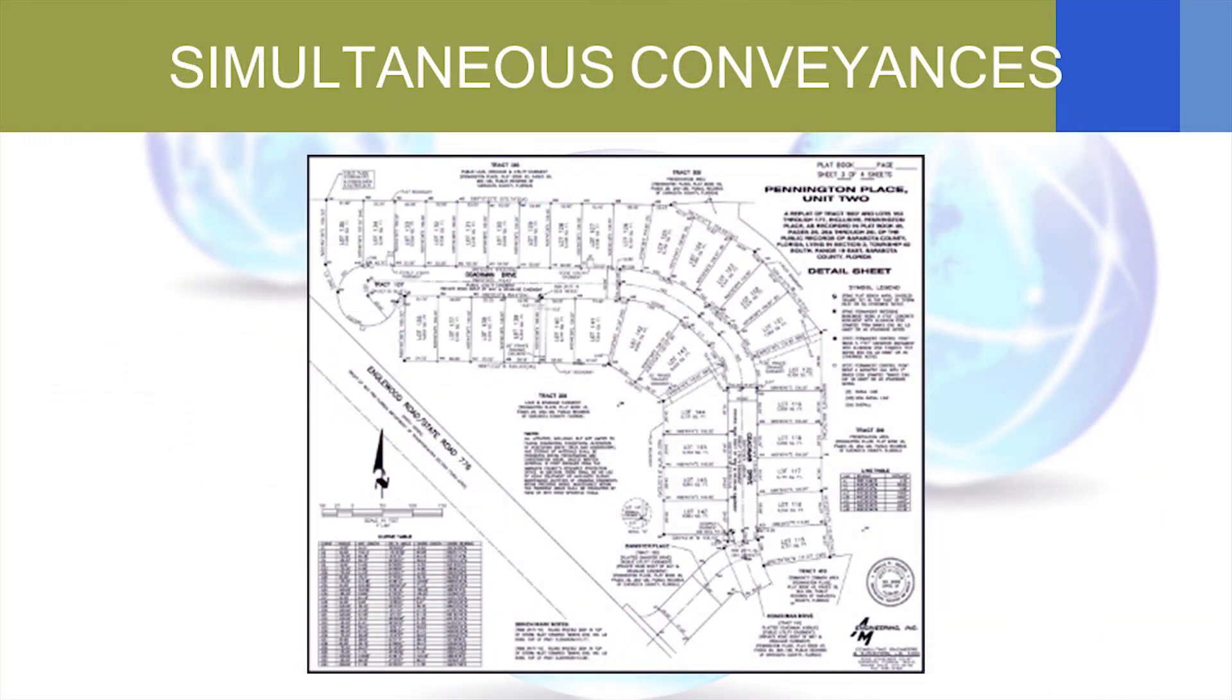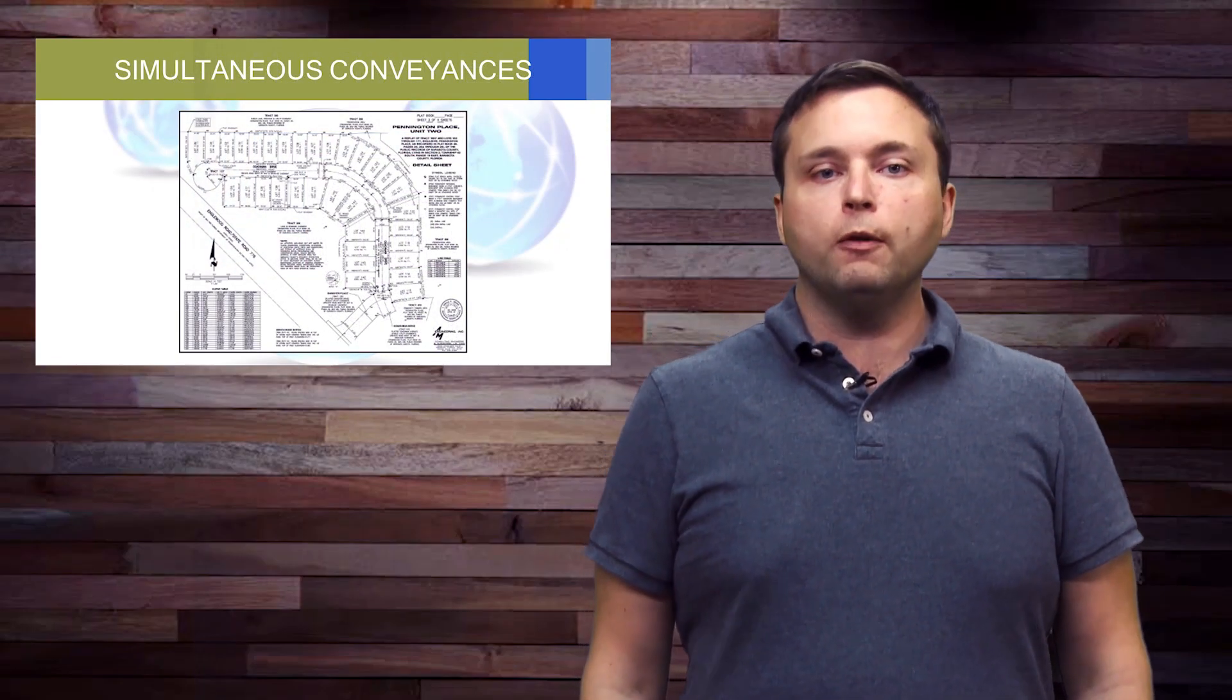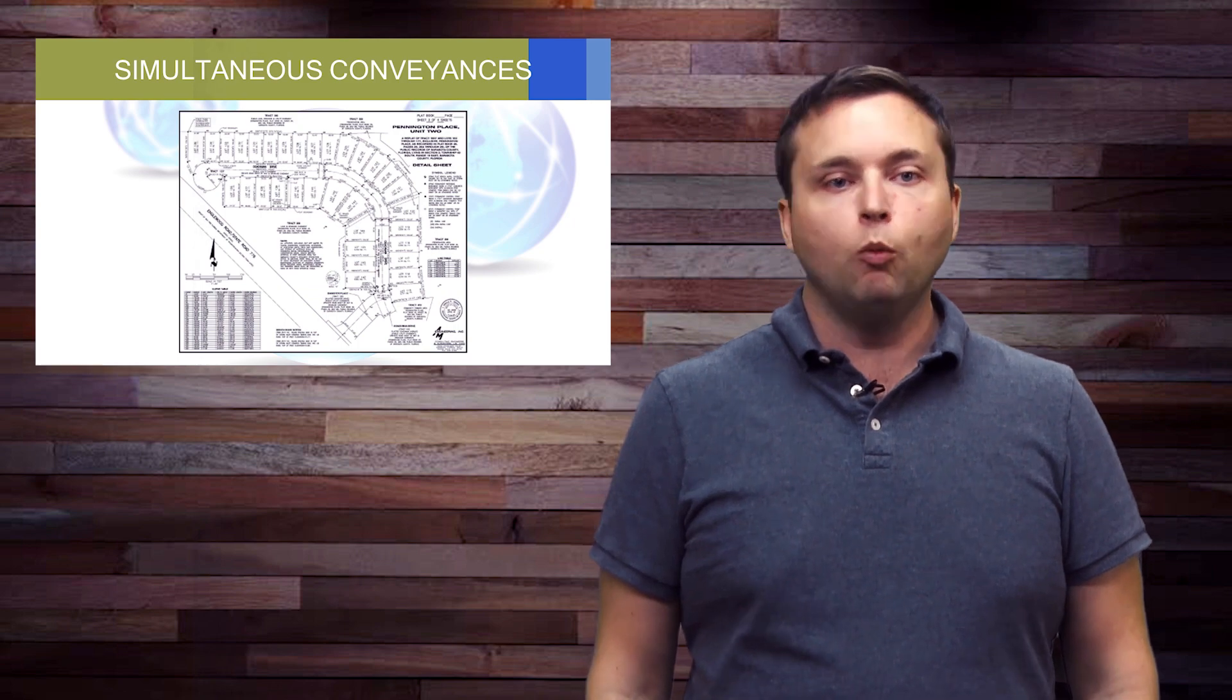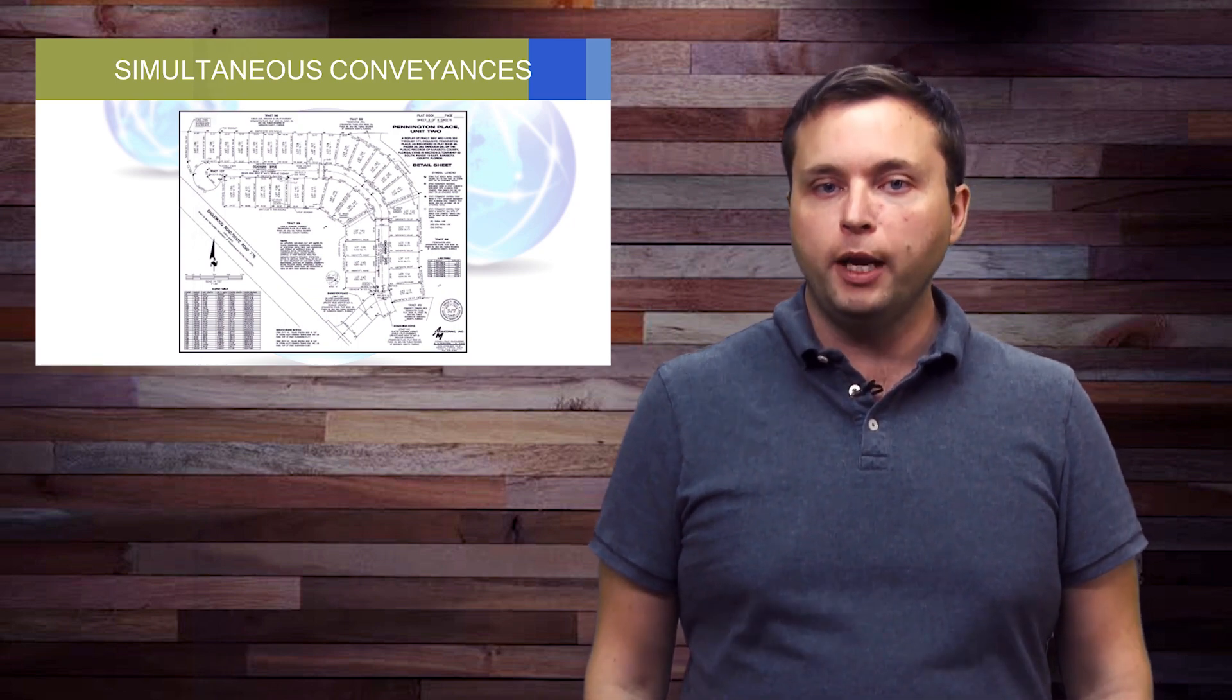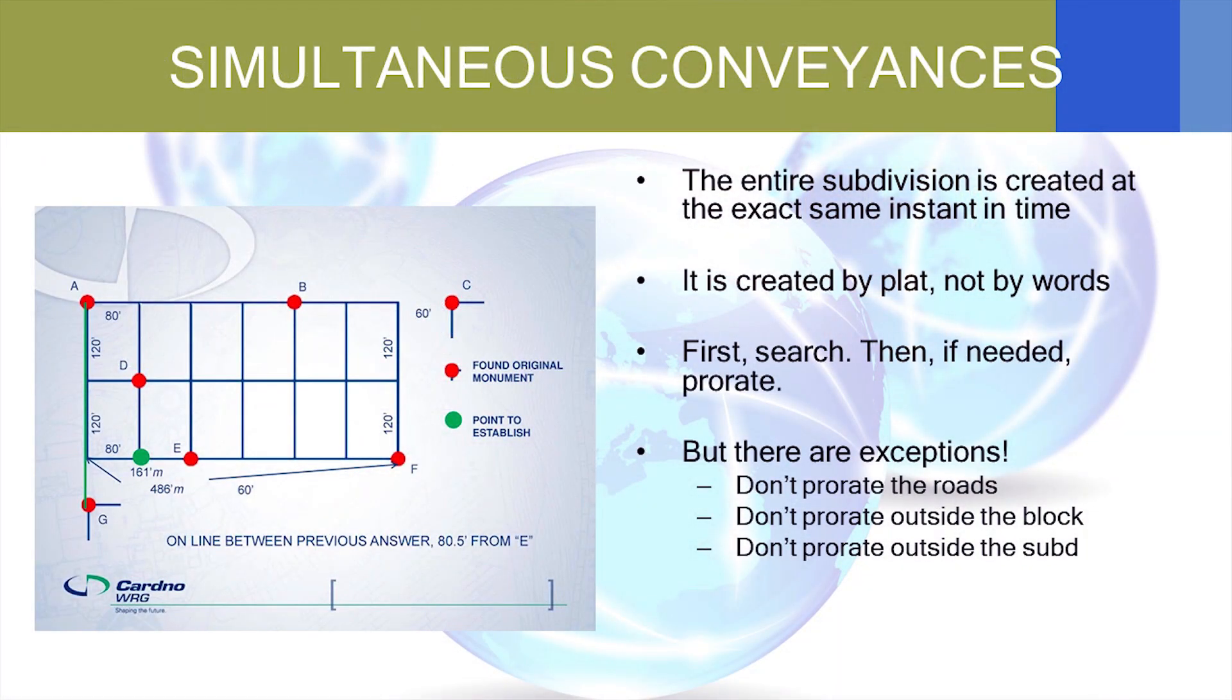Next, we have simultaneous conveyances. A simultaneous conveyance is when we have one plat and that plat creates hundreds or thousands of lots at the same time. So, we've got lots, roads, parks, utilities, all the stuff in the plat is created when that survey plat is recorded.